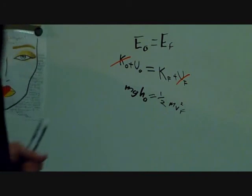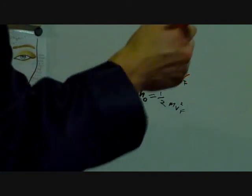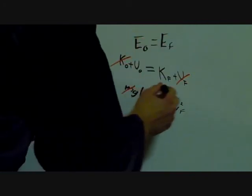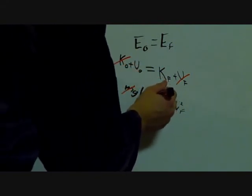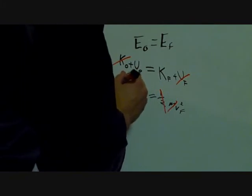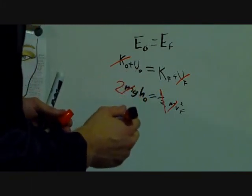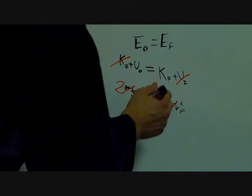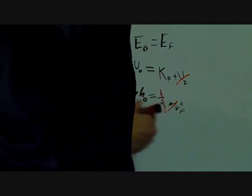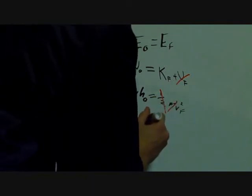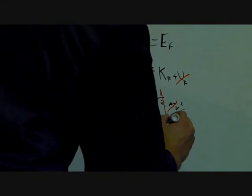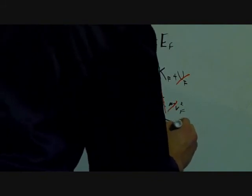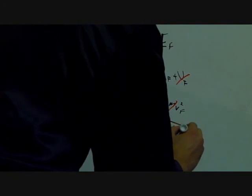To finish this problem is now just simple algebra. M cancels out. You can multiply each side by 2, this becomes 1, you multiply the whole side by 2, and then you square root each side. Therefore, v final is equal to the square root of 2gh initial.